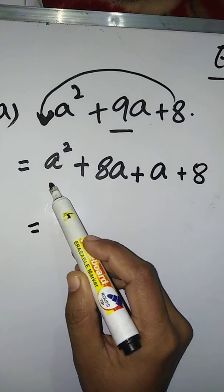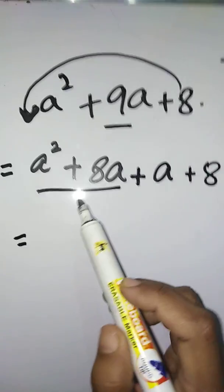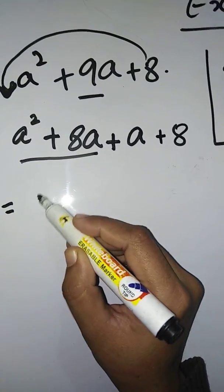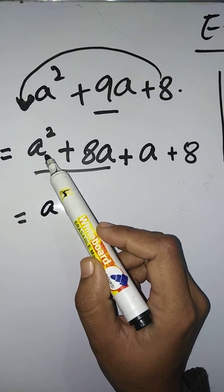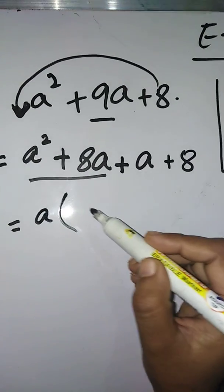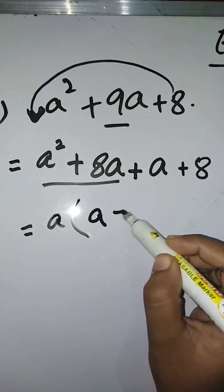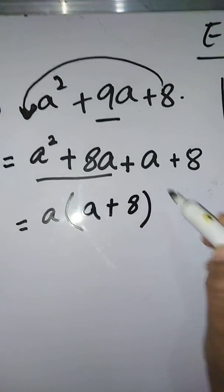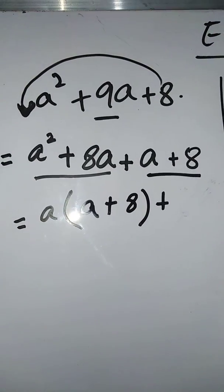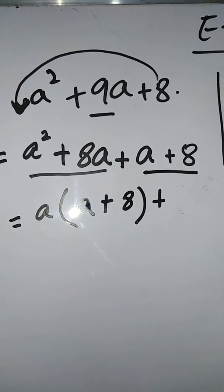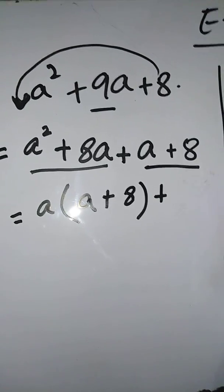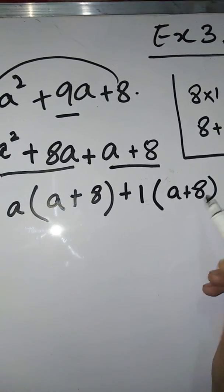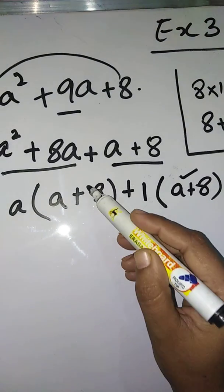Now take common factors from the first two terms. 'a' is common in a² and 8a. Taking out 'a': from a² we get a, from 8a we get 8, giving a(a + 8). In the next two terms, 1 is common, giving 1(a + 8).